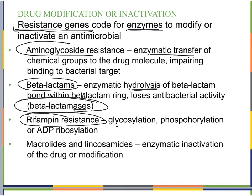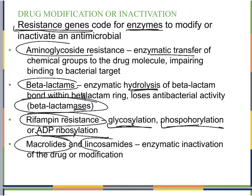Rifampin resistance occurs via glycosylation (adding a glycogen group), phosphorylation (adding a phosphate group), and ADP ribosylation (adding an ADP ribose). Again, by globbing something onto the rifampin, it no longer does what it's supposed to. For macrolides and lincosamides, there is enzymatic inactivation or modification of the drug — they can break it and inactivate it, or stick stuff to it and change it around so it no longer works.